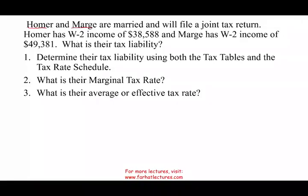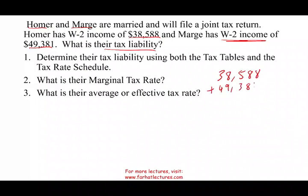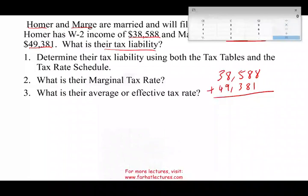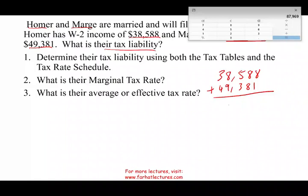Let's go back to this problem to illustrate how to compute the taxes. Homer and Marge are married and will file a joint return. Homer has W-2 income of $38,588; Marge has W-2 income of $49,438. You have to be careful — they're giving you the W-2 income, not their taxable income. So first, take $38,588 plus $49,381. Their total income together is $87,969.